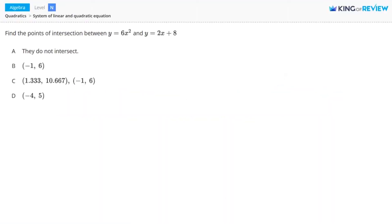Hi, this is King of Review. Find the points of intersection between y equals 6x squared and y equals 2x plus 8.